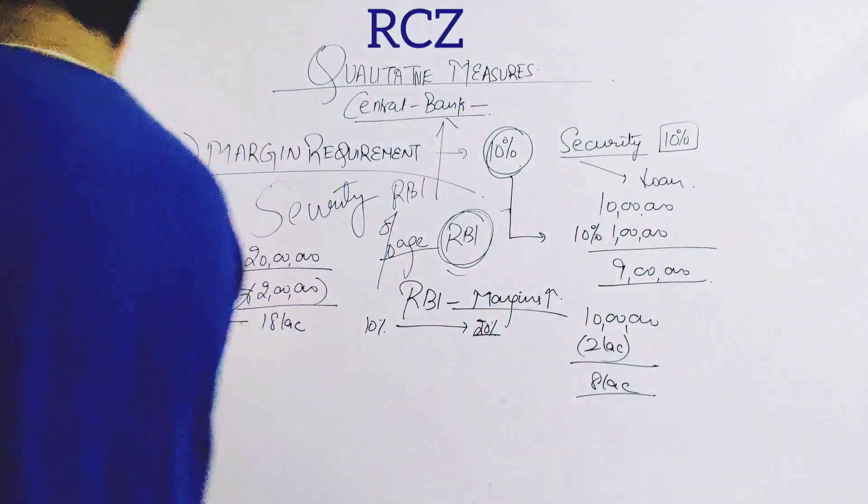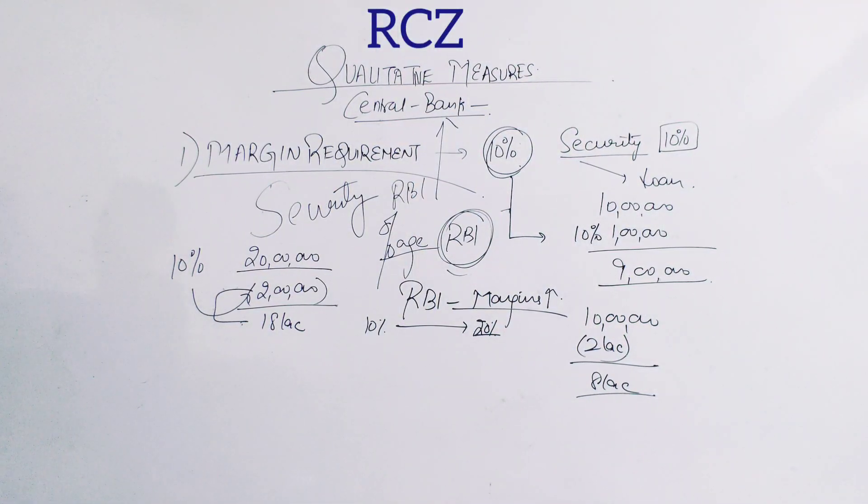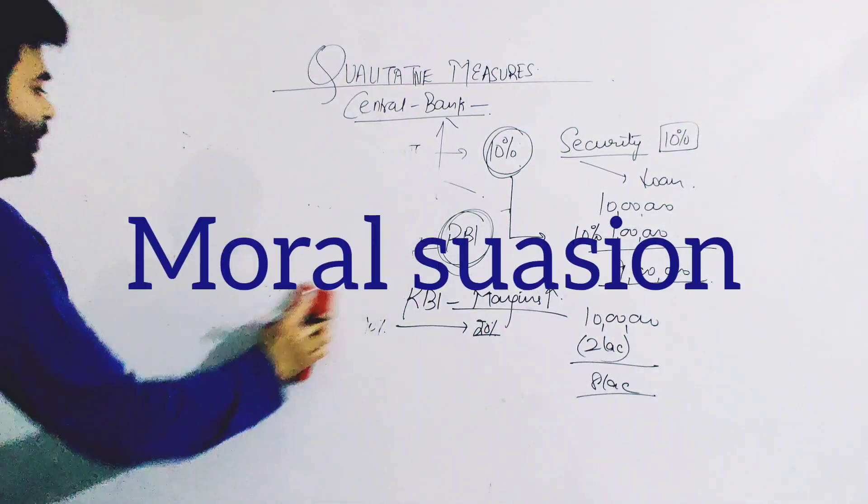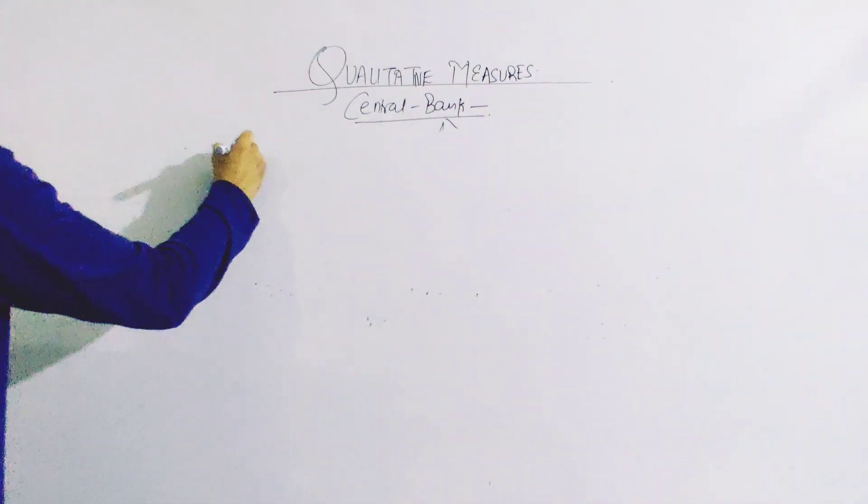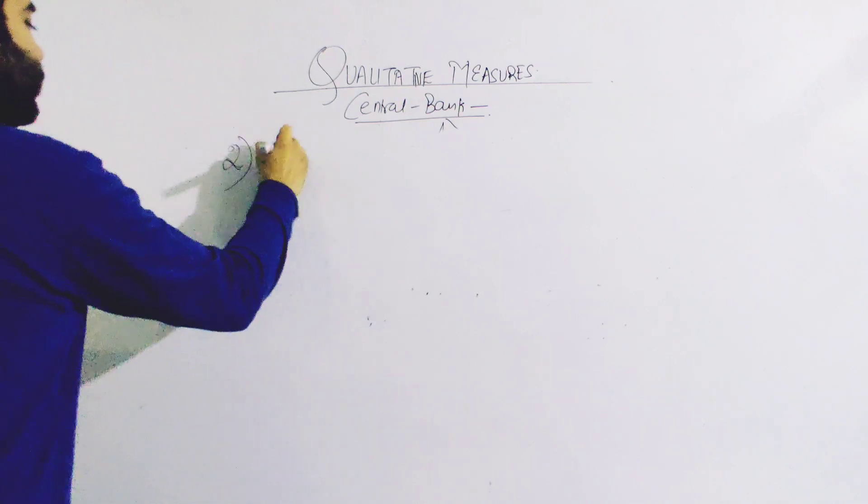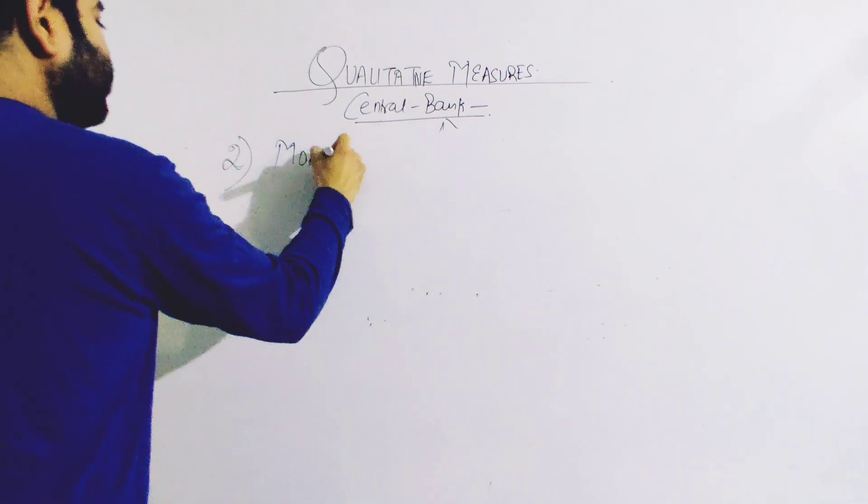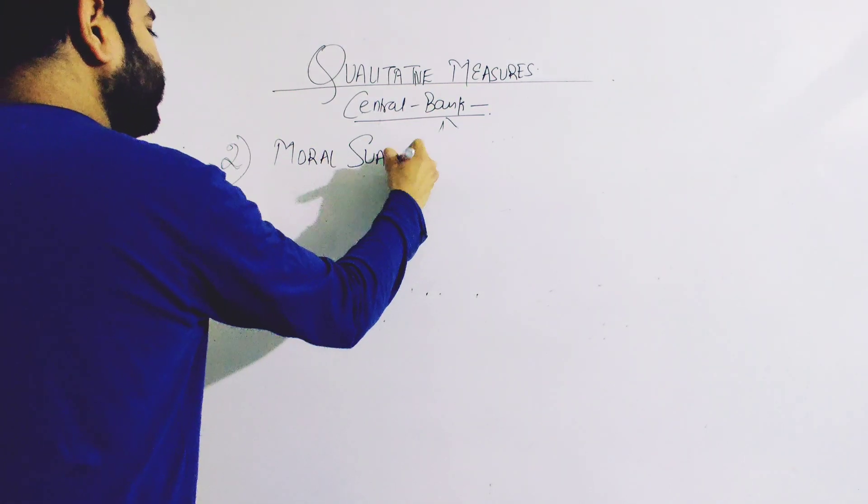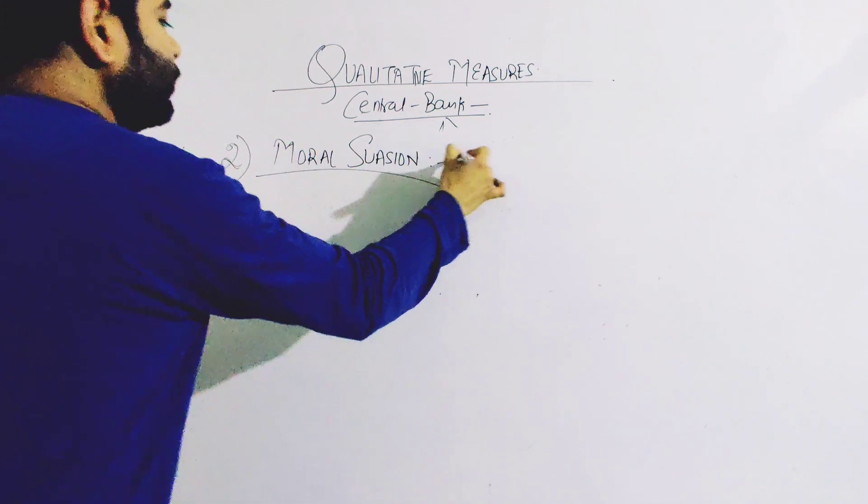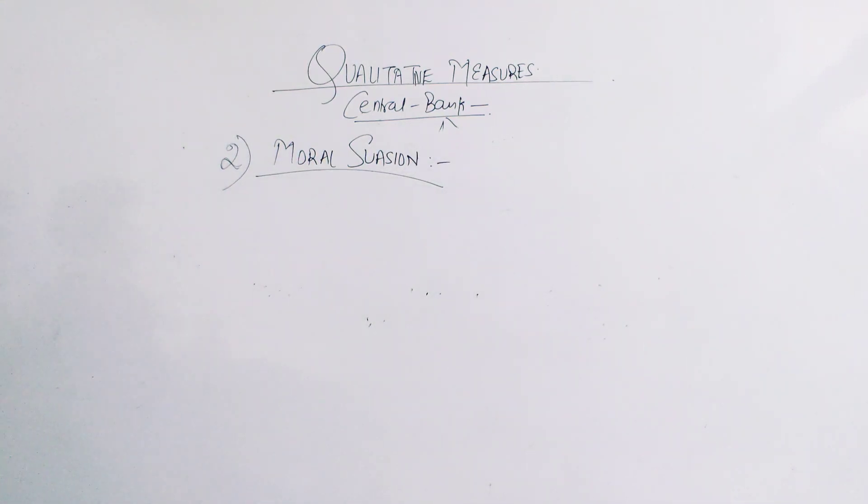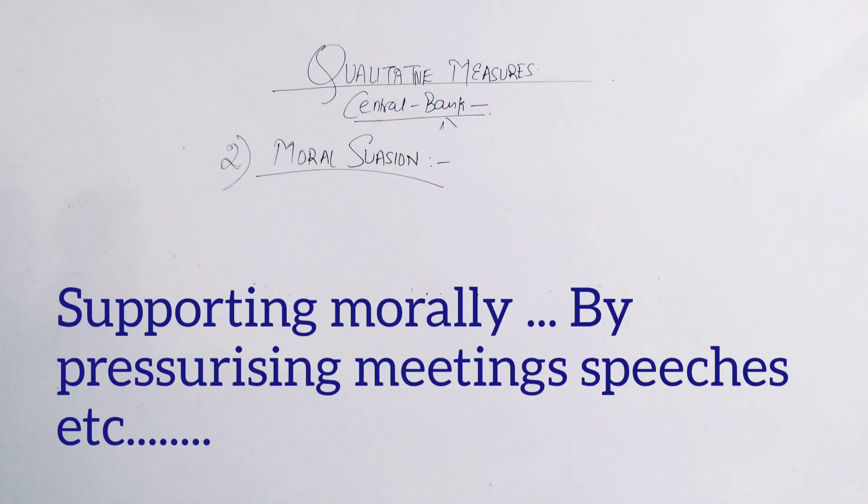That's the first point. Moving further, the next point number two is Moral Suasion. What is Moral Suasion? Moral Suasion basically means morally support, pressurize.